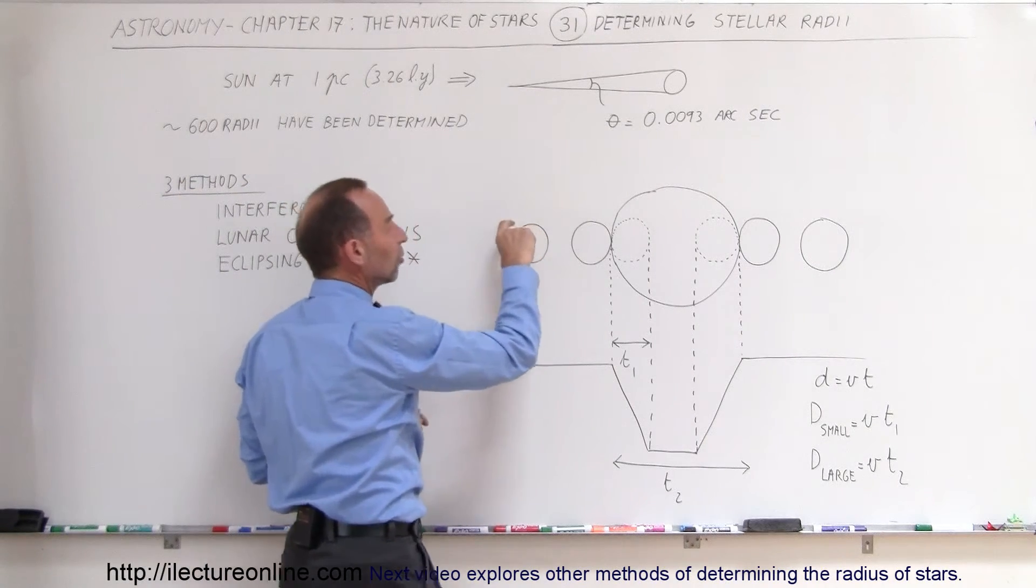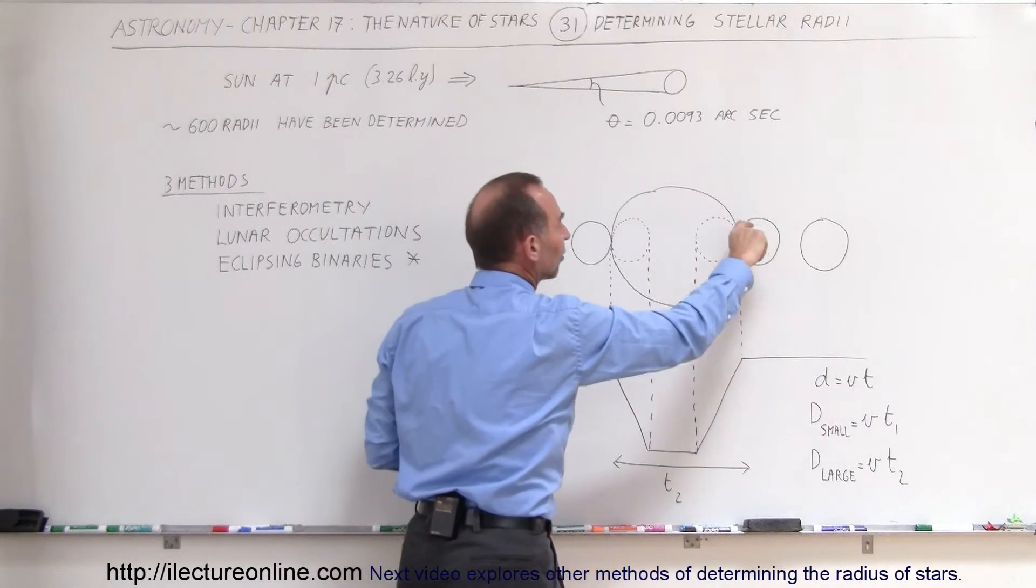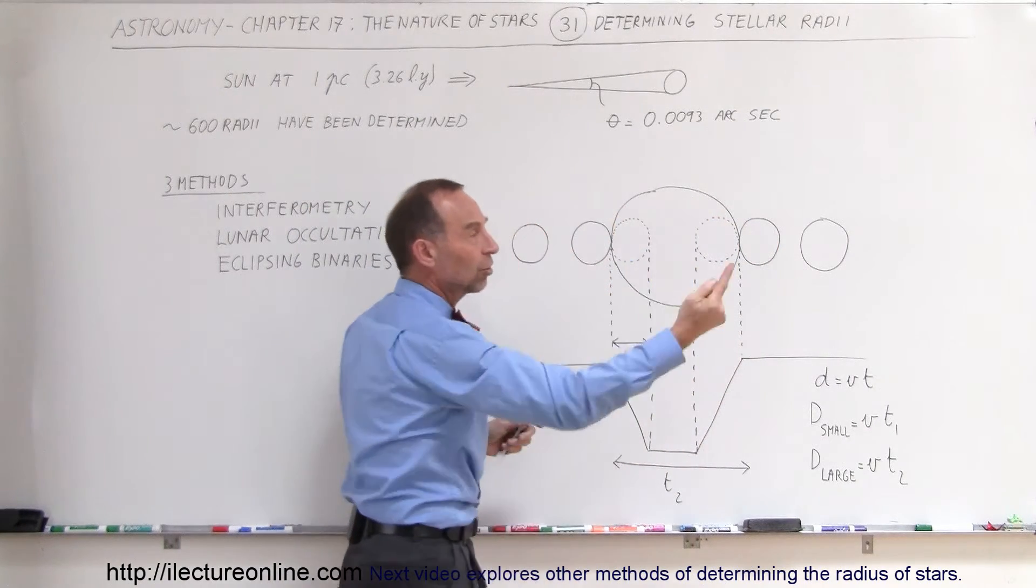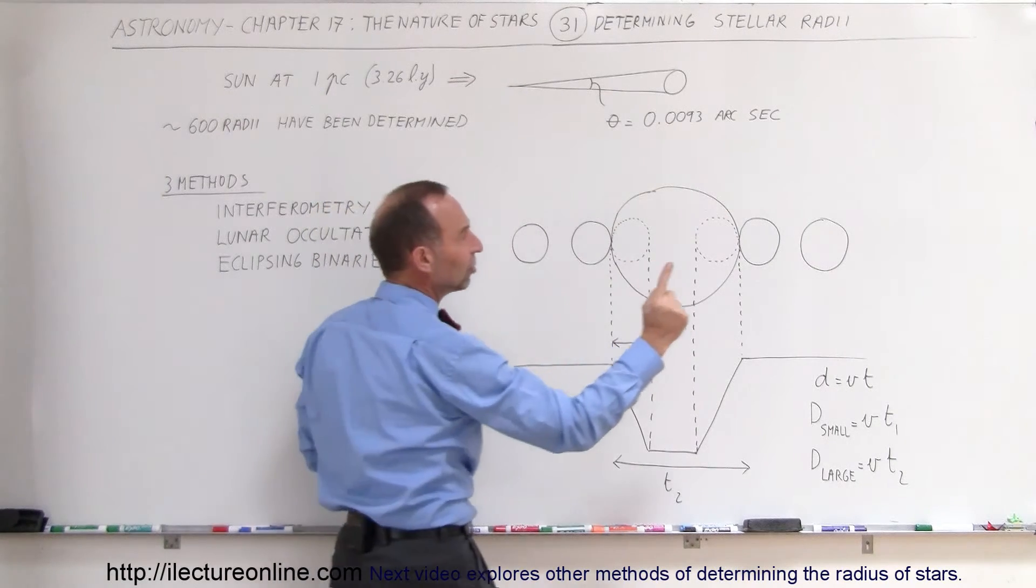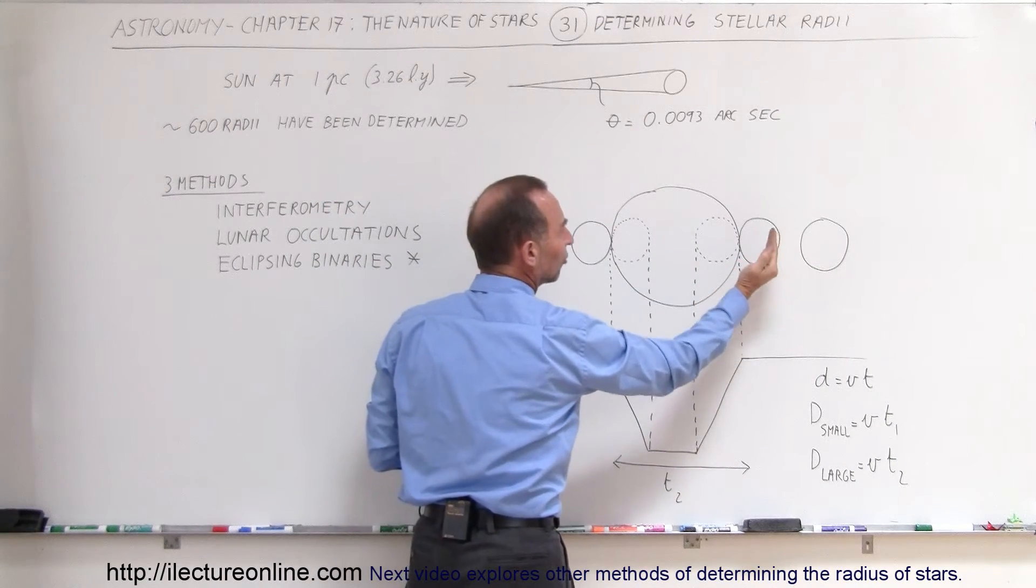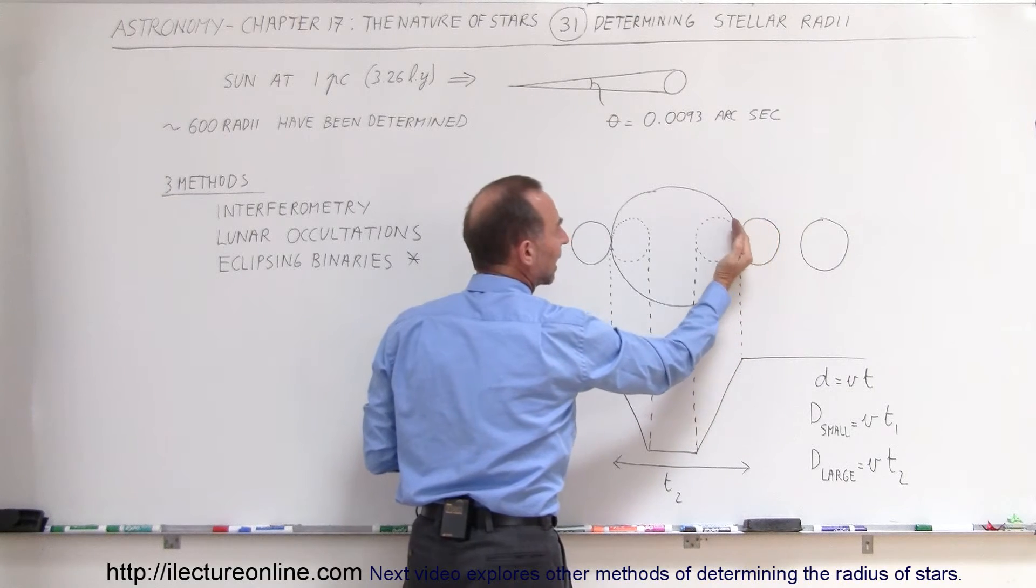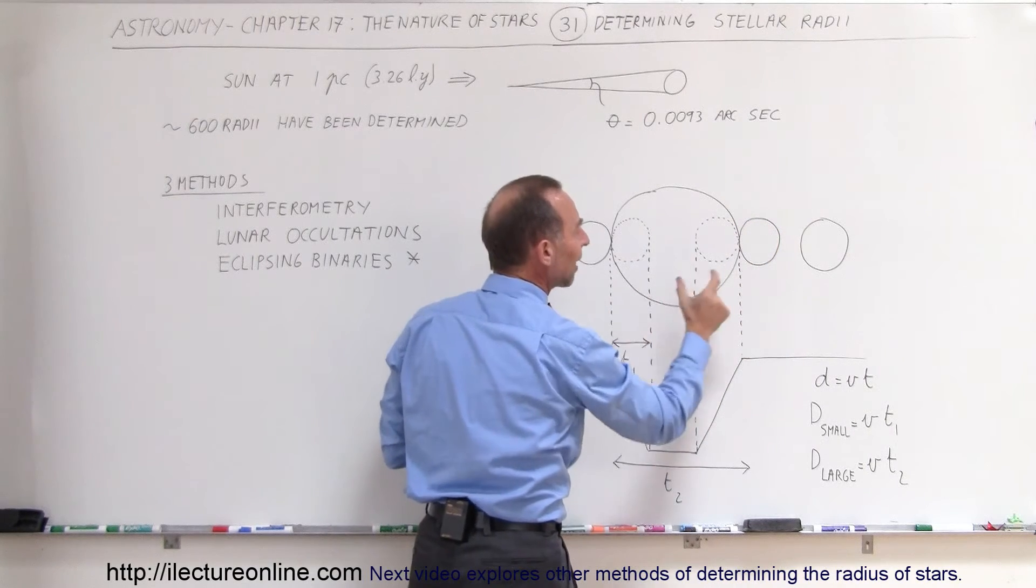For example, the smaller star sometimes will go in front of the big star and sometimes will go behind the big star as it goes around like this. Which means we can actually watch it disappear behind the star, and slowly over time the star will move behind like that, and we can measure the time that it takes for it to do so.